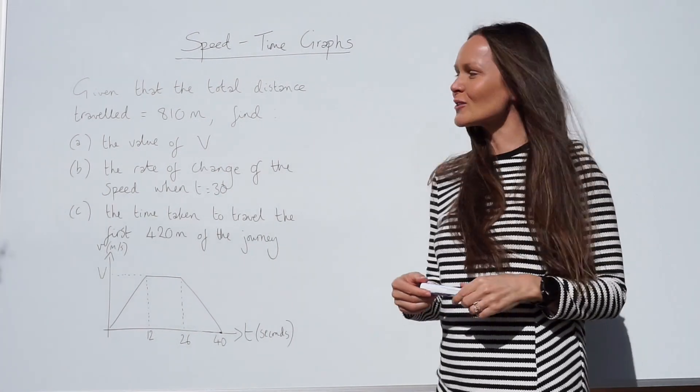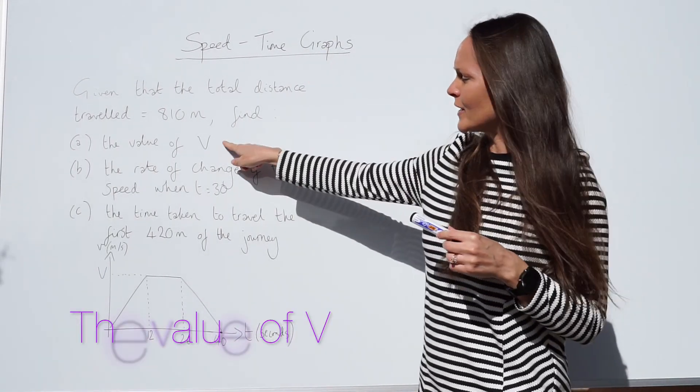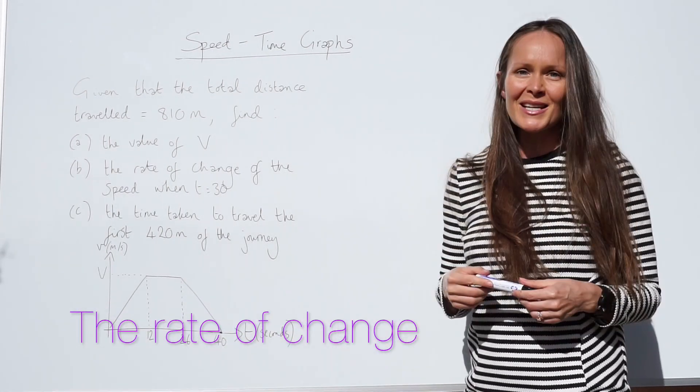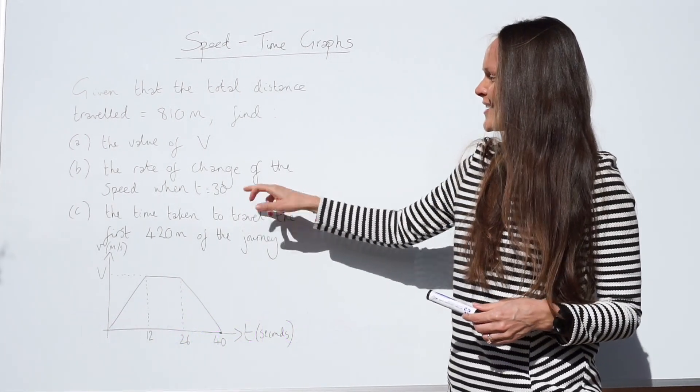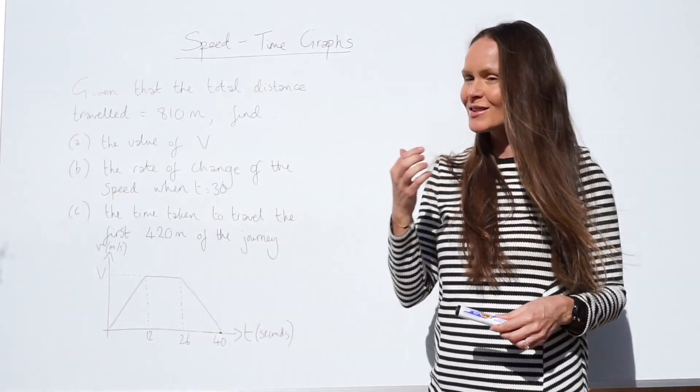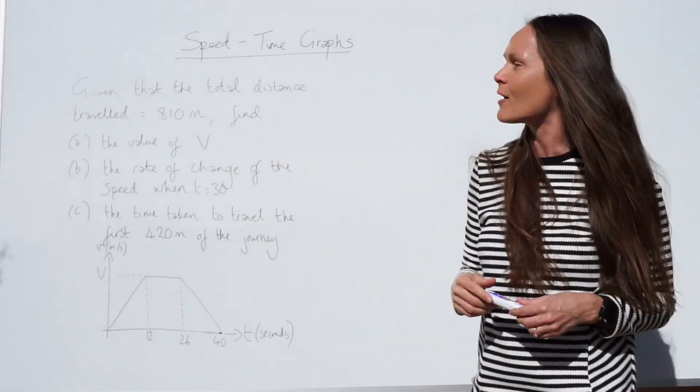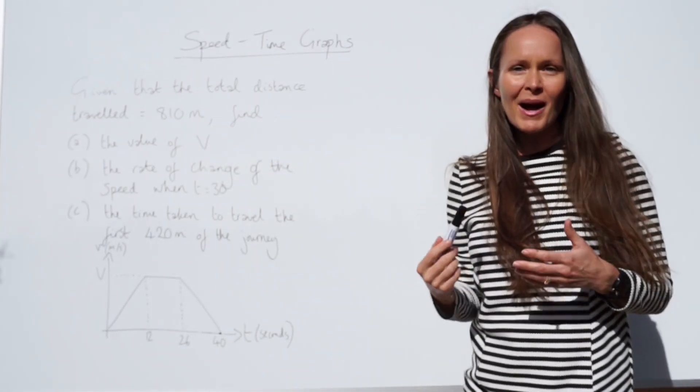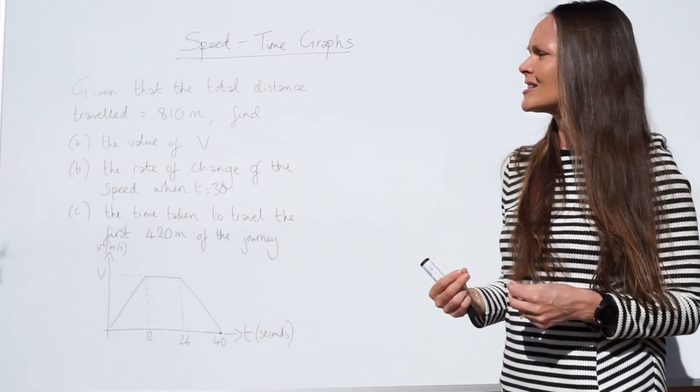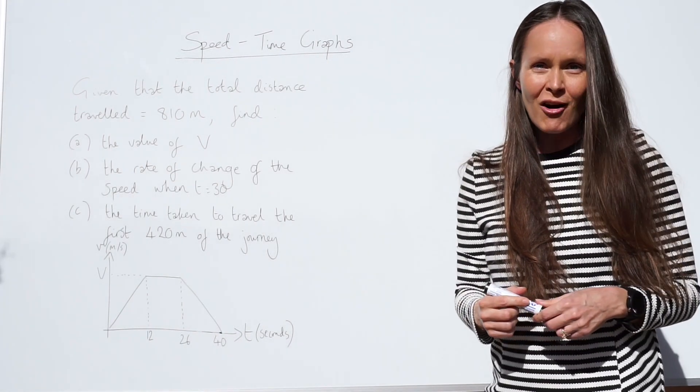Hey guys, in this video I'm going to show you how to use a speed time graph to find the value of v, the maximum velocity in this question, the rate of change of the speed when time is equal to 30 seconds, and also the time taken to travel the first 420 metres of the journey. In this question they tell us the total distance travelled is 810 metres. Hopefully by now, after you've seen the other lessons on speed time graphs, you know that the distance travelled is found by looking for the area underneath the graph.